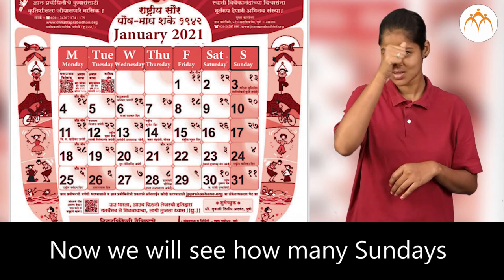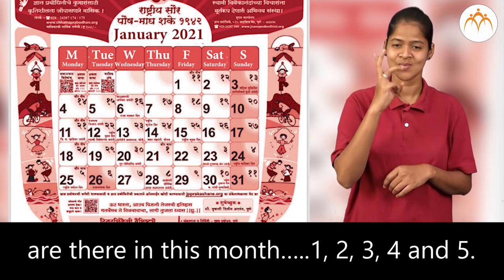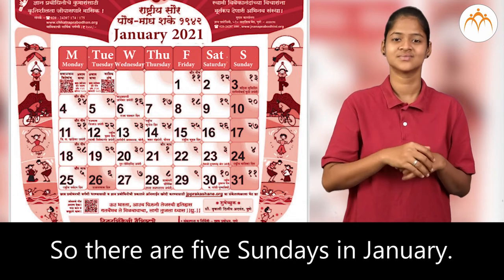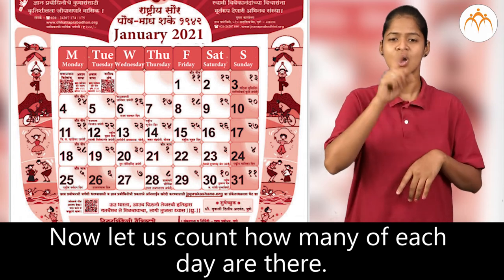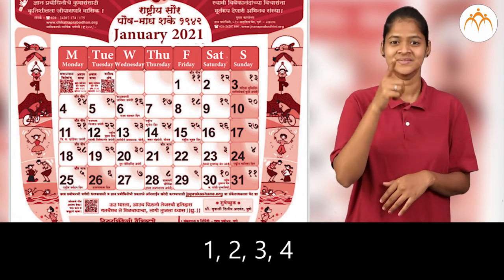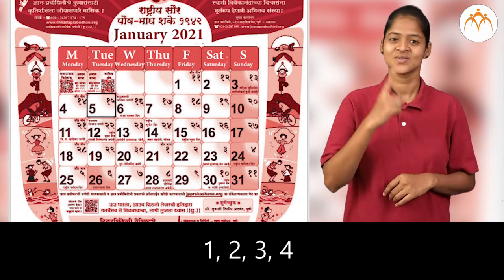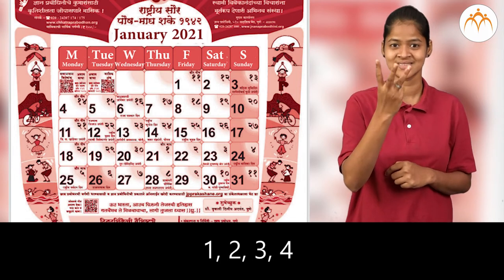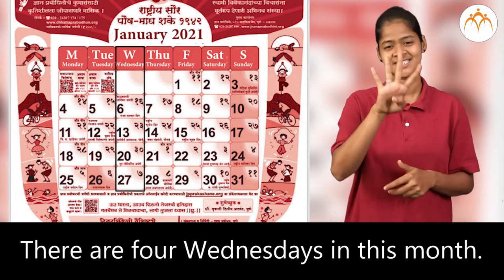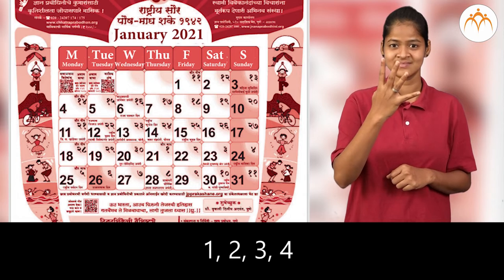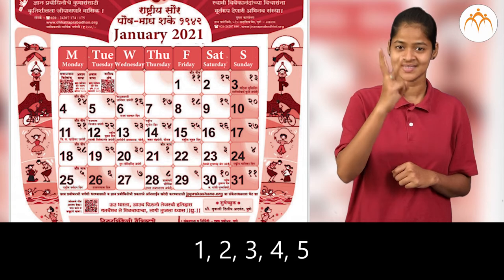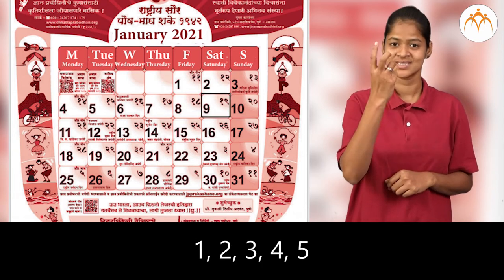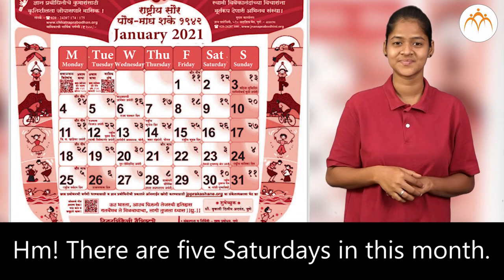We will see how many Sundays are there in this month: 1, 2, 3, 4 and 5 — there are 5 Sundays in January. Let us count how many of each day there are. There are 4 Mondays in this month. There are 4 Tuesdays in this month. There are 4 Thursdays in this month. There are 5 Fridays in this month. There are 5 Saturdays in this month.